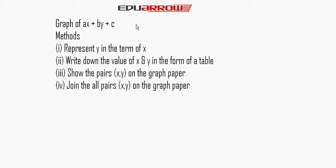If we want to show the linear equation on graph paper, follow the given steps. Number 1: represent y in terms of x. Here, the equation is ax plus by plus c equals 0. So by is equal to minus c minus ax, therefore y equals minus c minus ax over b. Here we represent y in terms of x.